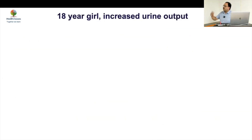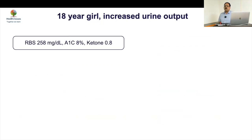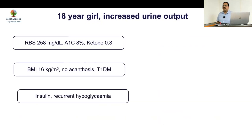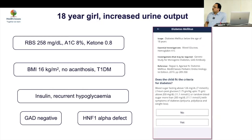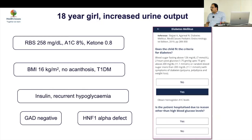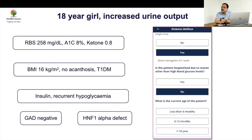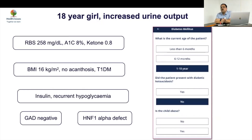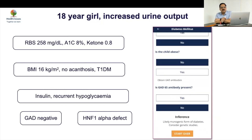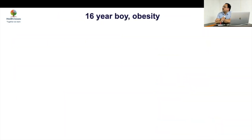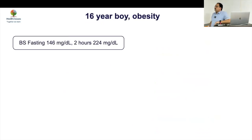Second case: an 18-year-old girl with increased urine output, labeled as type 1 diabetes even though there was no DKA and she was lean. GAD was negative, and she turned out to have a MODY form. In someone without DKA who is non-obese, the key parameter is the GAD antibody — if it is negative, go for MODY genetic testing, which becomes important in that setting.